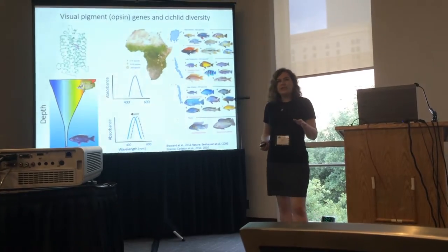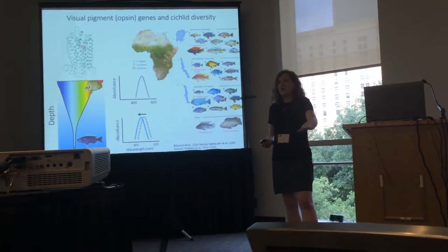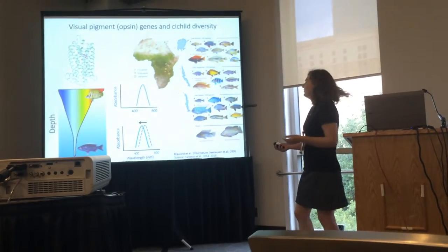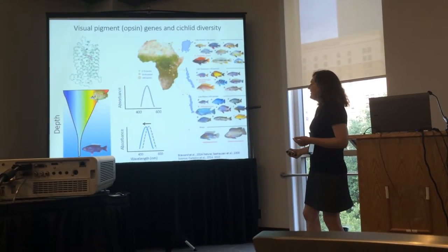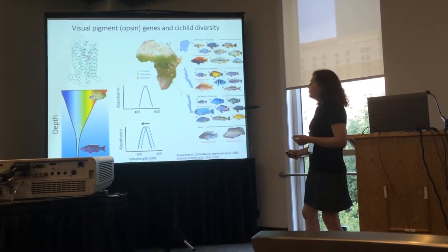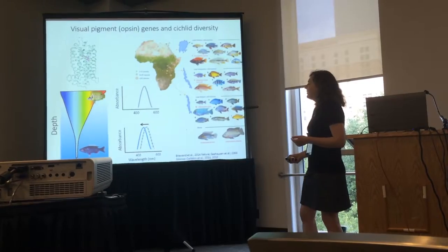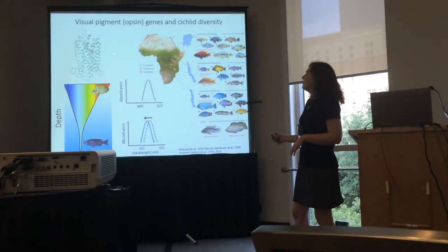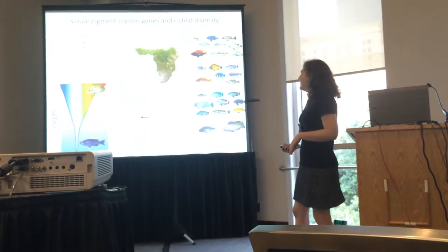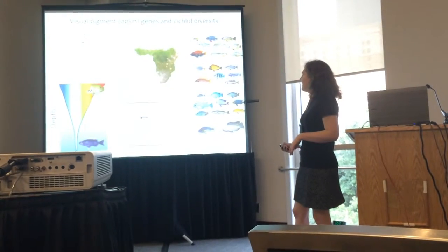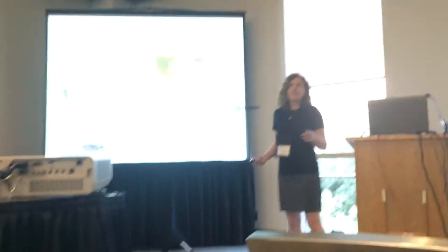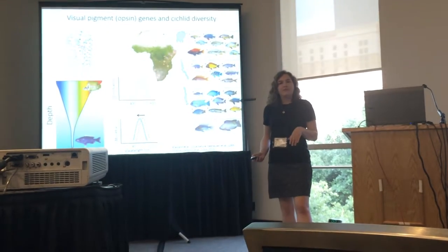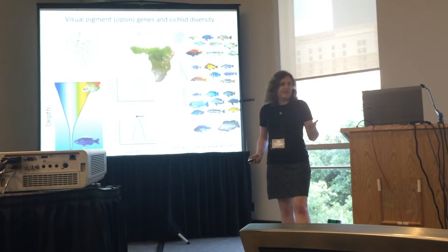A closely related cichlid living at the bottom of the lake is encountering a markedly different spectral environment. As you can see with depth, this wavelength narrows into the blue end of the spectrum. We might expect to see changes in the opsin gene that mediate a shift in this pigment to the blue end of the spectrum, which would better match the spectral environment that this fish is inhabiting.